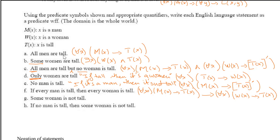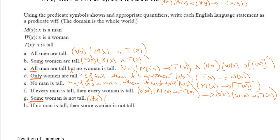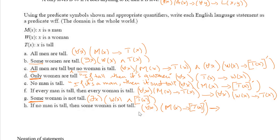'Some woman is not tall': there exists x such that x is a woman and x is not tall — ∃x(W(x) ∧ ¬T(x)). 'If no man is tall then some woman is not tall': the antecedent is ∀x(M(x) → ¬T(x)), and this implies there exists x such that x is a woman and not tall — ∃x(W(x) ∧ ¬T(x)).